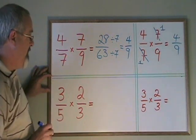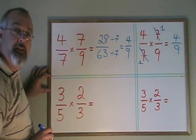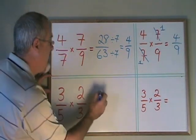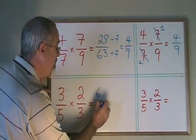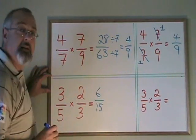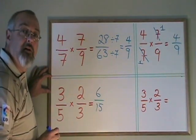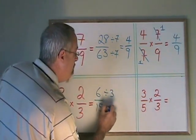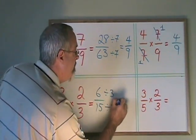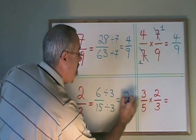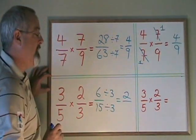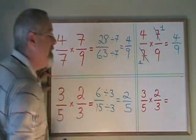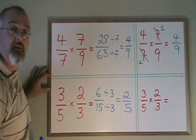Let's try this one: 3/5 times 2/3. 3 times 2 is 6, and 5 times 3 is 15. But 6 and 15 have a common factor of 3, so I divide both top and bottom by 3. 6 divided by 3 is 2, and 15 divided by 3 is 5. My final answer is 2/5.